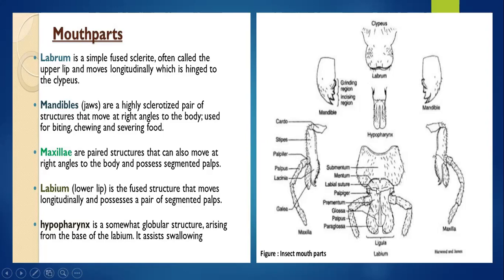Another structure present is called labium, known as the lower lip. It is a fused structure that moves longitudinally and possesses a pair of segmental palps. So the labium is the lower lip fused with the ligula and also consists of palps.